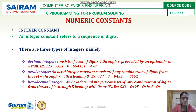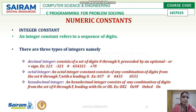A decimal integer constant is the set of digits 0 through 9, optionally preceded by a plus or minus sign. Only the numbers from 0 through 9 can be used. Examples include 123, -321, 0654321, and +78. The maximum digit is 9 and the minimum is 0.